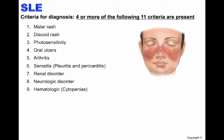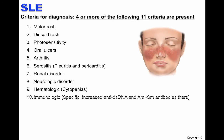Cytopenias are reductions in the number of cells normally found in the blood. Immunologic criteria include the presence of anti-double-stranded DNA and anti-Smith antibodies. Lastly, anti-nuclear antibodies may be found; however, these are characteristic of many autoimmune diseases and are not specific to SLE.